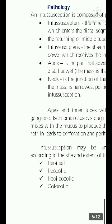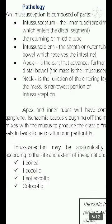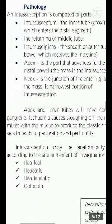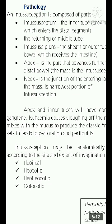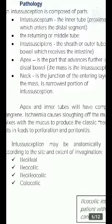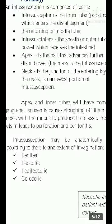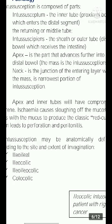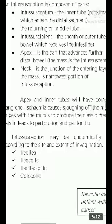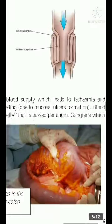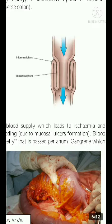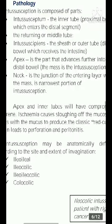Regarding the pathology, intussusception is composed of parts: the intussusceptum, which is the inner tube or proximal bowel that enters the distal segment; the returning or middle tube; and the intussuscipiens, which is the outer tube or distal bowel that receives the intestine. The apex is the part that advances further into the distal bowel. The neck is the junction of the entering layer with the mass and is the narrowest portion of the intussusception.